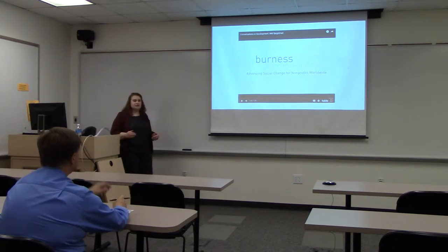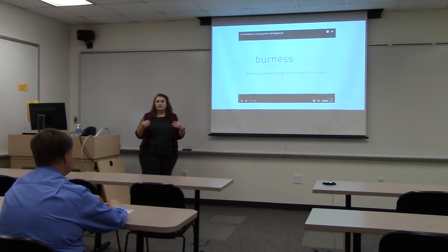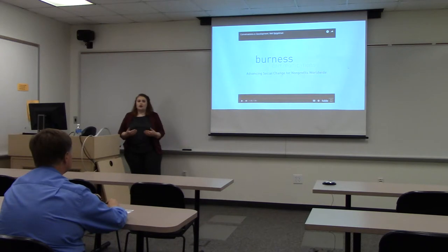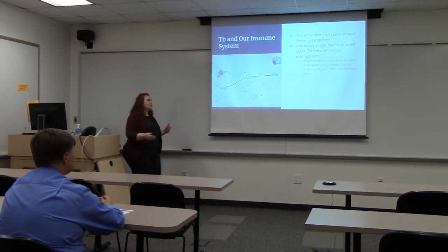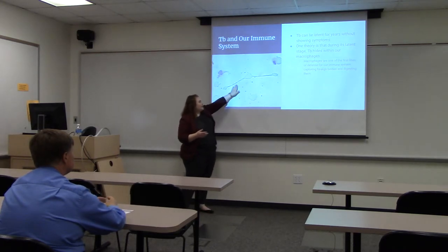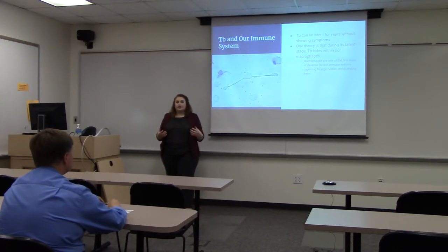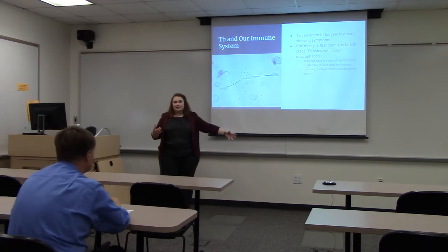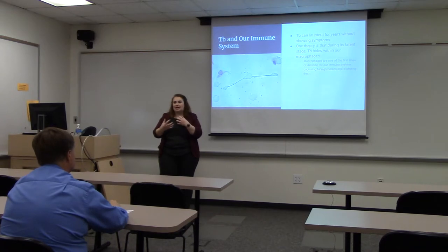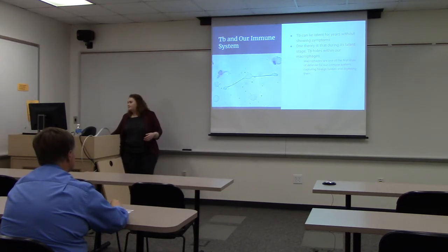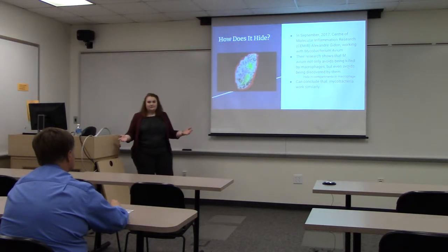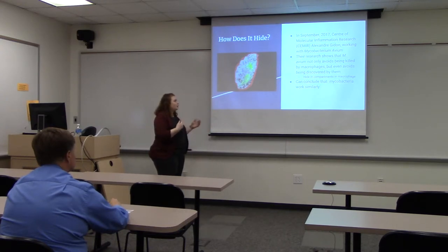If tuberculosis is an issue anywhere, it's an issue everywhere. So at this point, it's almost our responsibility as countries with more access to science and resources to look into new and more effective treatments. To do that, we need to understand how tuberculosis works within our immune system. We have cells called macrophages — a type of white blood cell and our first line of defense. Ordinarily, when foreign bodies enter, the macrophage grabs them, pulls them in, and digests them with enzymes. We would think it would do the same with tuberculosis.